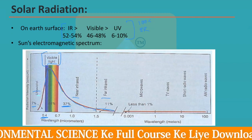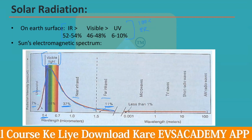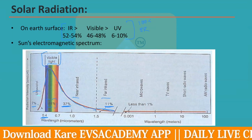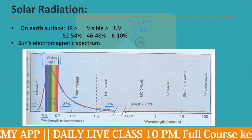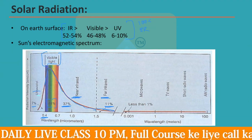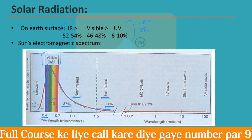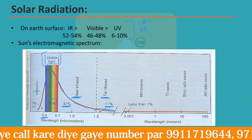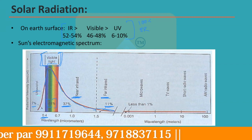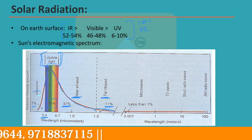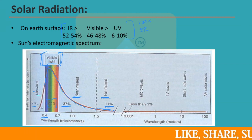37 percent of solar radiation is near infrared and 11 percent is far infrared, while visible light contributes around 44 percent. Adding near infrared plus far infrared gives about 48 to 50 percent, making infrared the highest amount overall. So if a question asks about intensity, go with visible light; if it asks about amount, the answer is infrared.